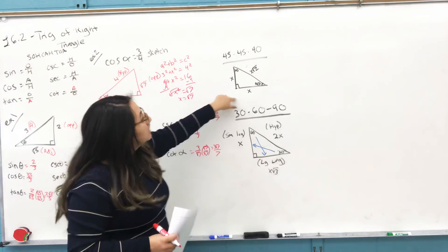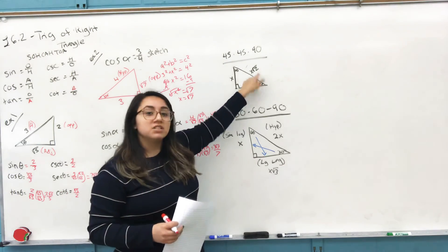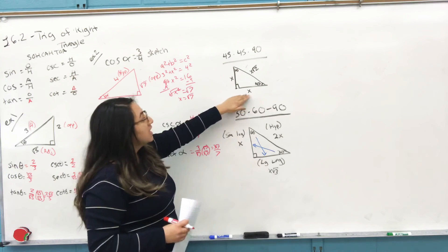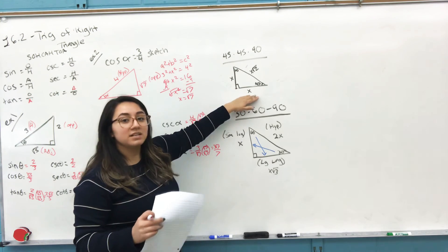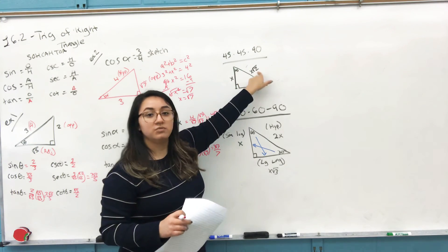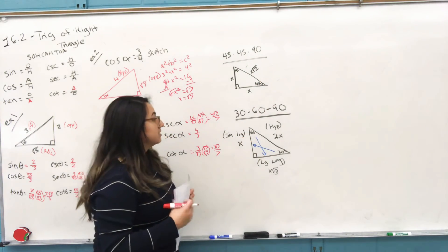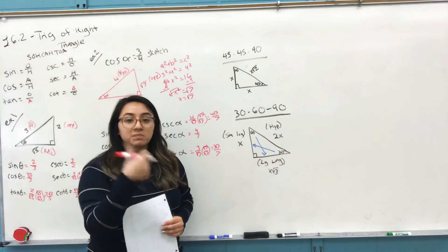And also for the hypotenuse, it's one of your legs times √2. So like I said, if one of your legs is 7, it would be 7 times √2, which would be 7√2. Here, 30-60-90 is where it's slightly different. You're always looking for your small leg first.